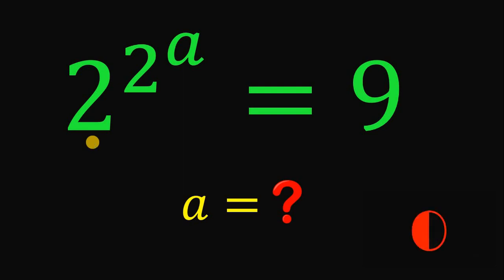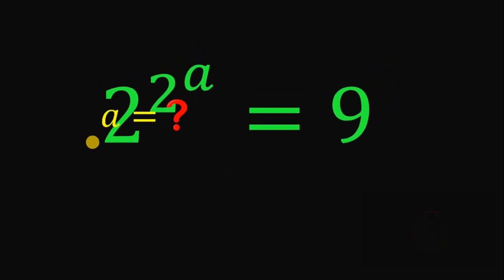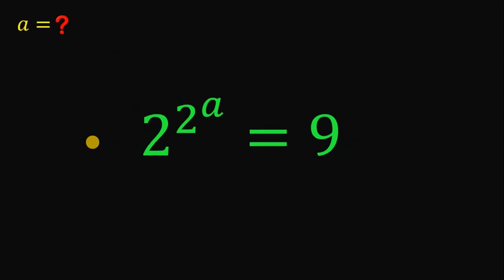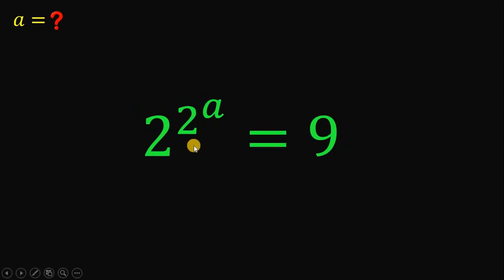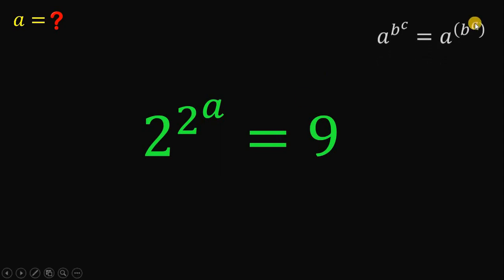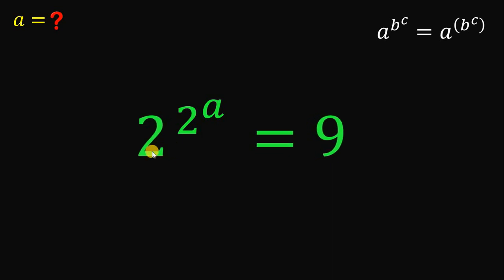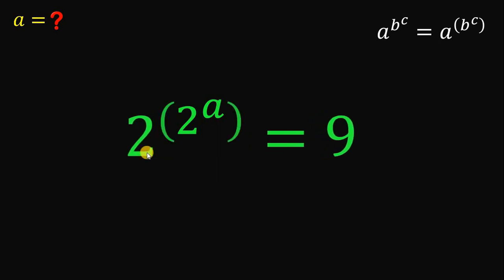Now, let's answer this question together. Our goal here is to solve for the value of A. To answer this question, take note that if we have A raised to B raised to C, it is equivalent to A raised to the power of B raised to C. Therefore, the left-hand side of our equation can be written as 2 raised to the power of 2 raised to A.